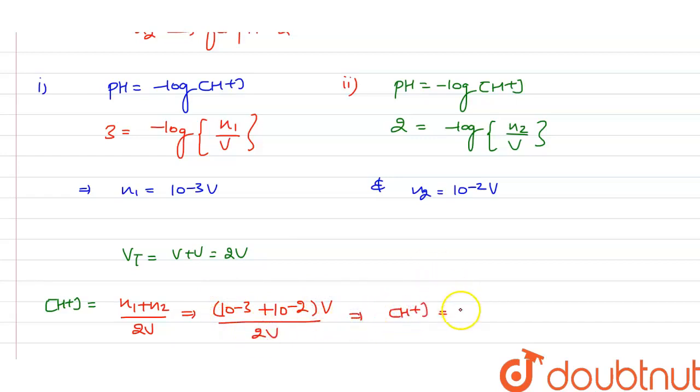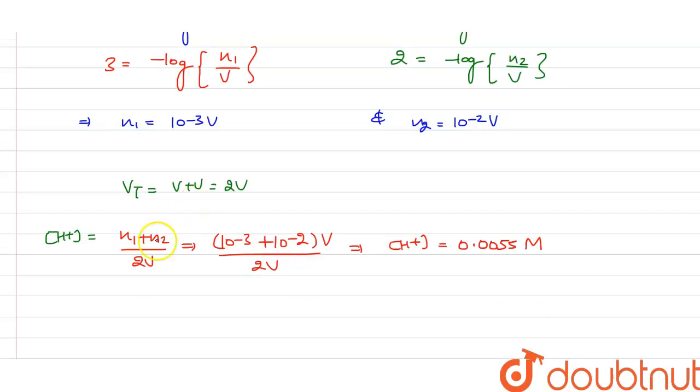So here on solving it, we get the H+ ion concentration as 0.0055 molarity. Now if you want to find out the pH, then pH will be minus log of H+. So putting the value of H+ here, it will be minus log of 0.0055.